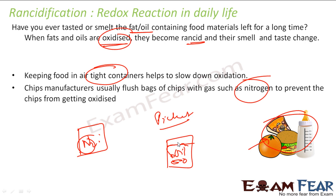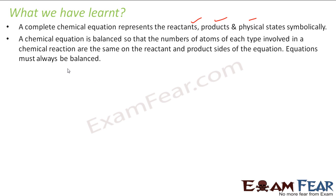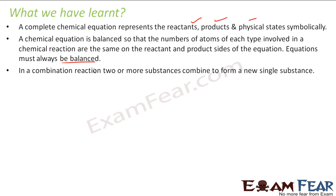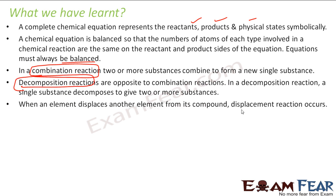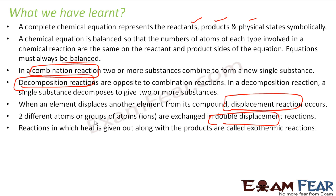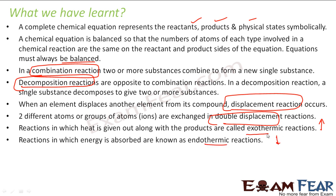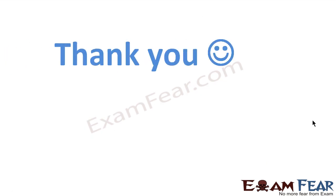To summarize: a chemical equation represents reactants, products, and physical states symbolically and must always be balanced due to the law of conservation of mass. In combination reactions, two or more substances form a single product; in decomposition, one compound breaks into more substances; in displacement, one element replaces another; in double displacement, both elements swap. Exothermic reactions give out heat; endothermic reactions require heat. Oxidation is gaining oxygen or losing hydrogen; reduction is the reverse.